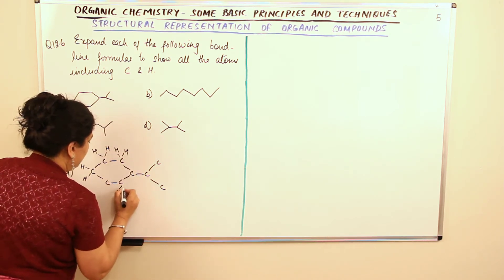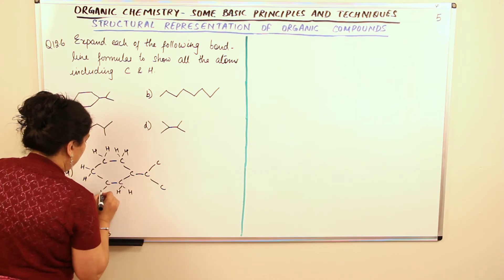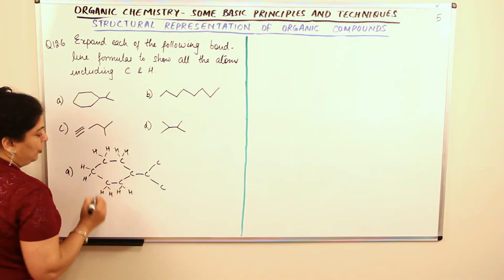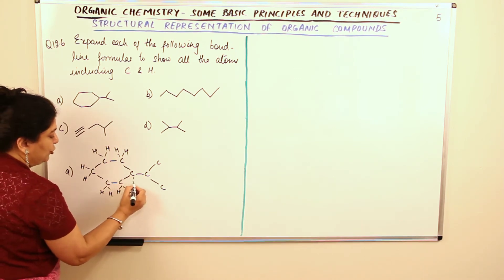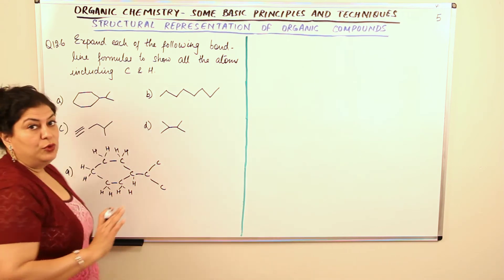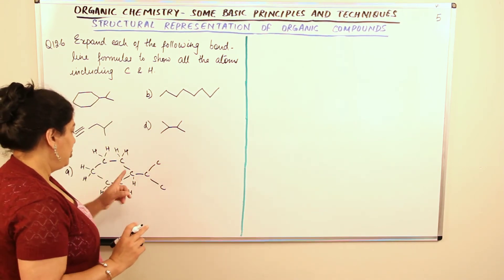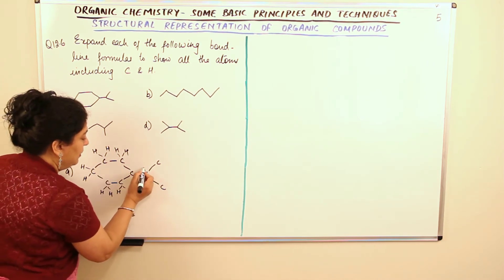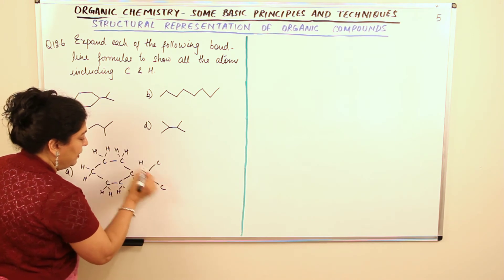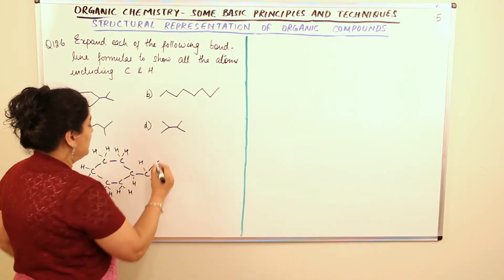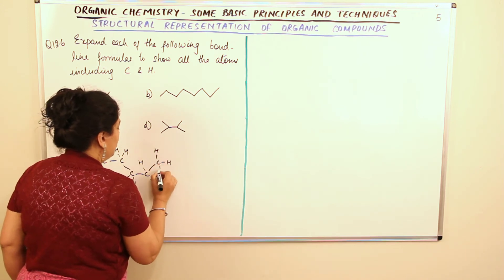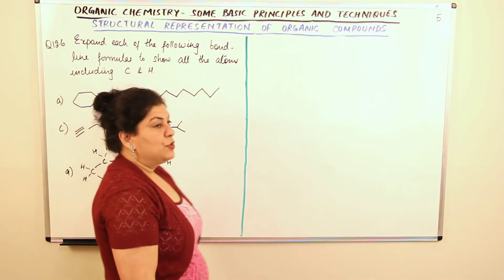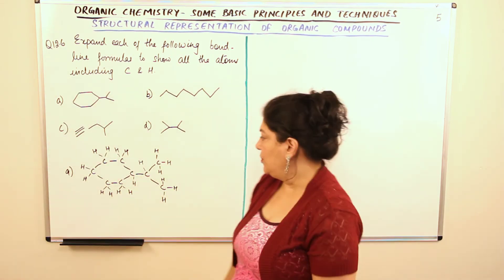Each carbon in the ring gets two hydrogens. And look at this carbon — it has three bonds already, so the fourth bond should be a hydrogen. It will have only one hydrogen because it is already forming three bonds. Similarly, this carbon needs only one hydrogen. And the terminal carbons will have three hydrogens each. So that forms the structure of the first molecule.